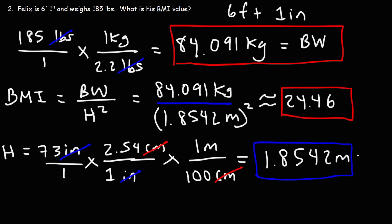A BMI between 18.5 and 25 means body weight is normal. Between 25 and 30 means overweight. Over 30 means obese, and under 18.5 means thin or underweight — you can look up the full chart online. Now you know how to calculate someone's BMI. Remember: body weight must be in kilograms, and height must be in meters.